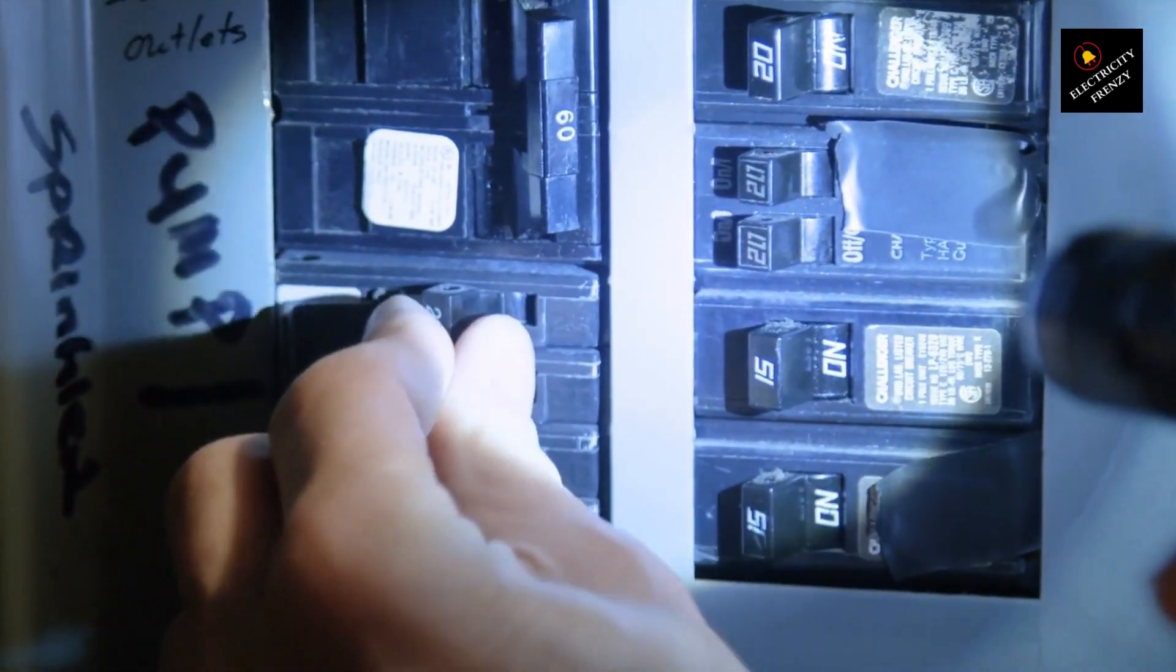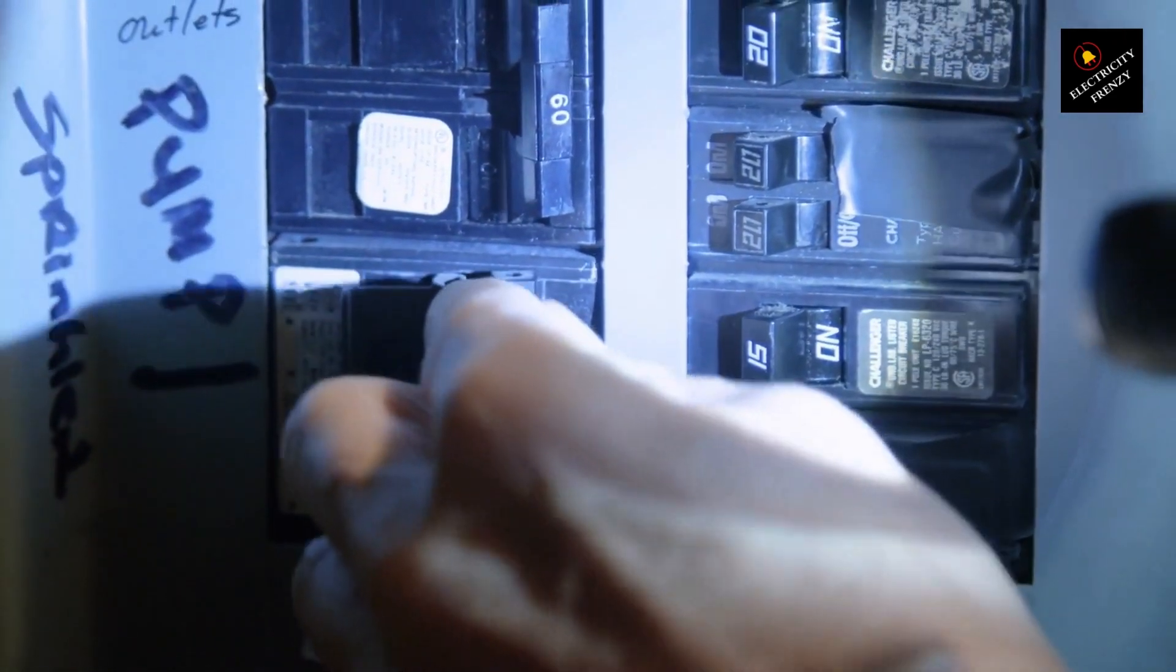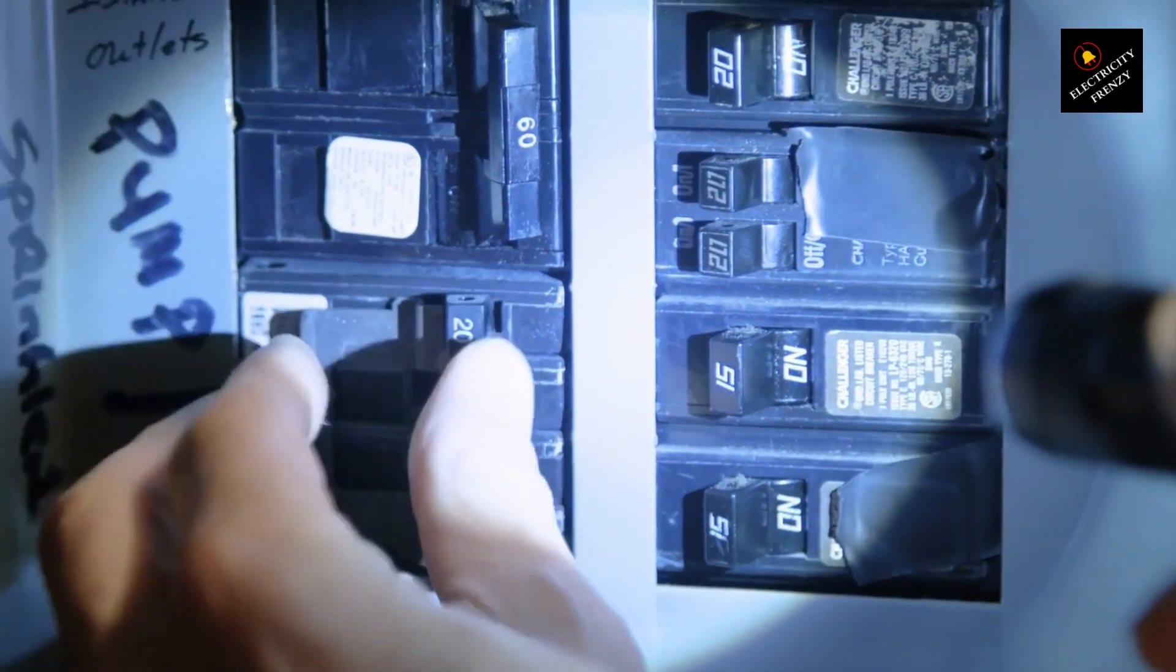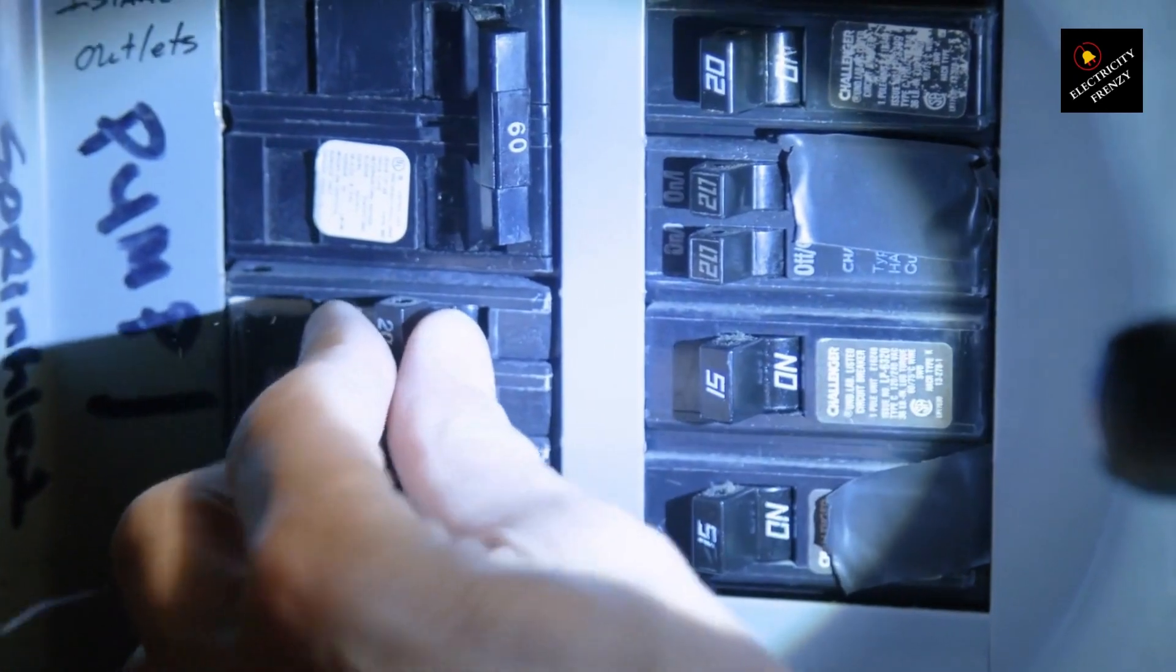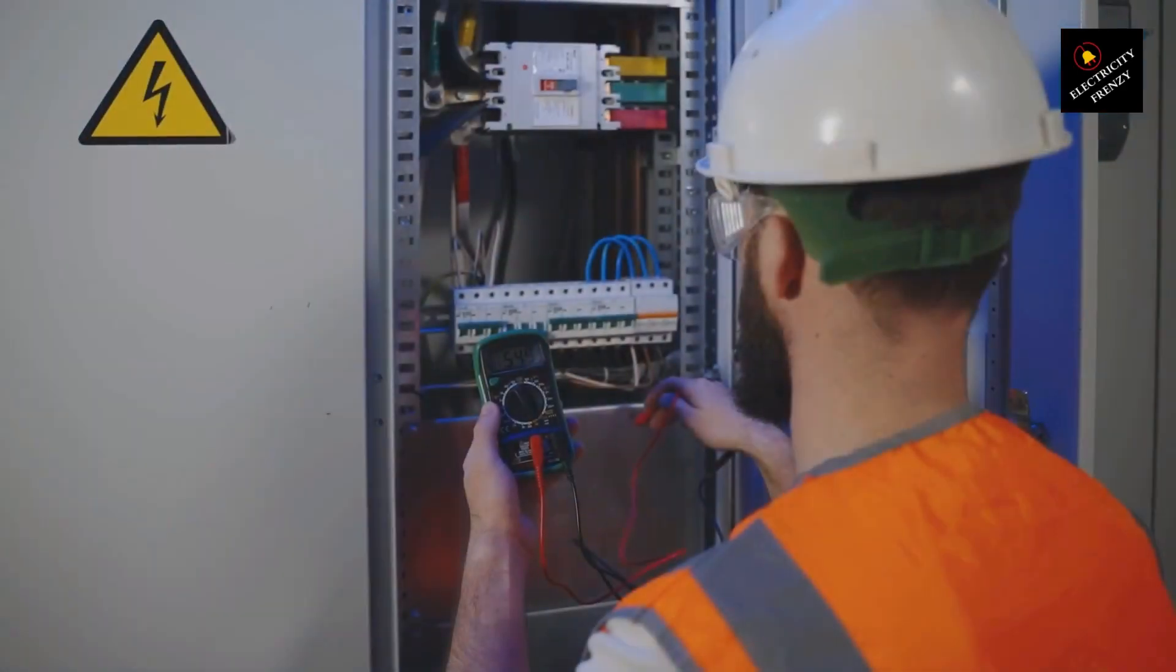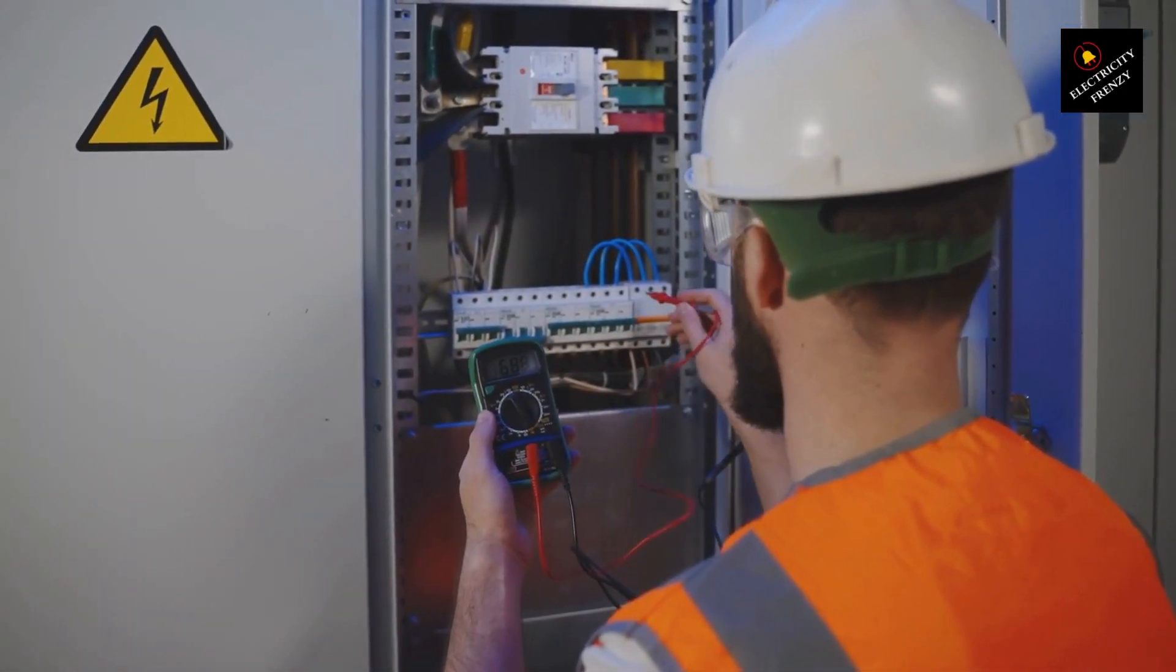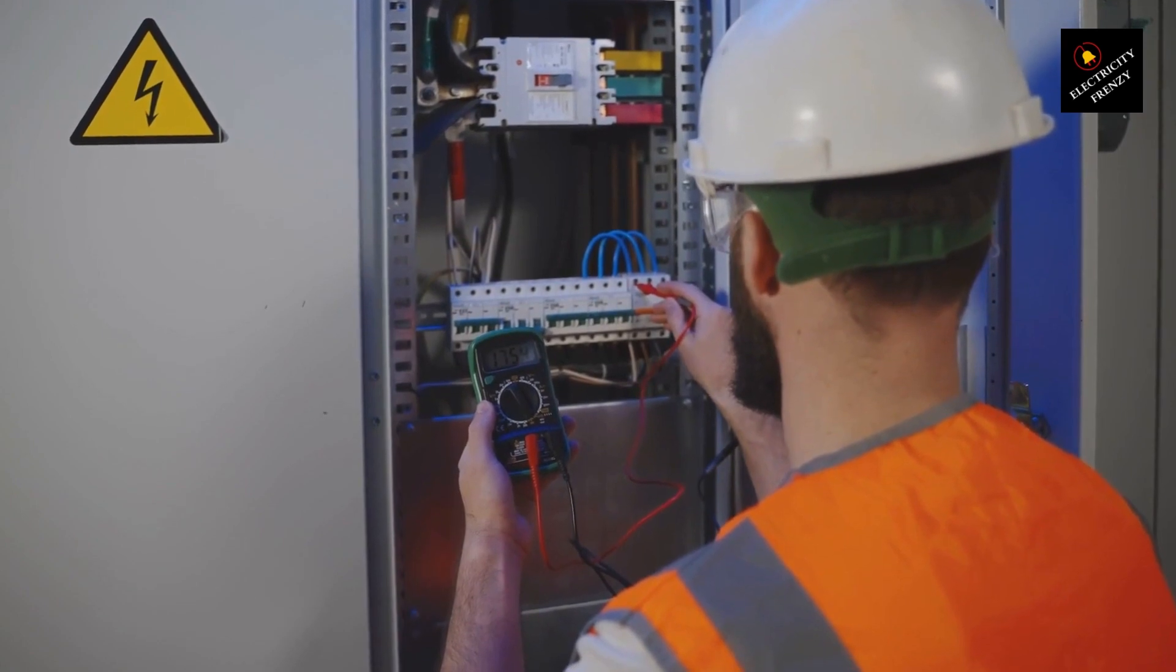It's important to systematically troubleshoot the issue to identify the root cause. Start by verifying if the circuit is overloaded due to sharing it with other high-power appliances. If that's not the case, proceed to inspect the wiring connections, look for signs of a short circuit, and check for any overheating components within the dryer.